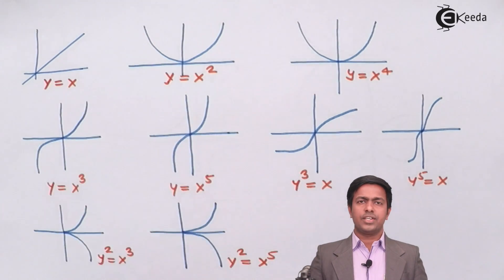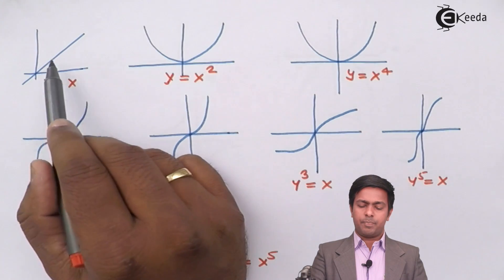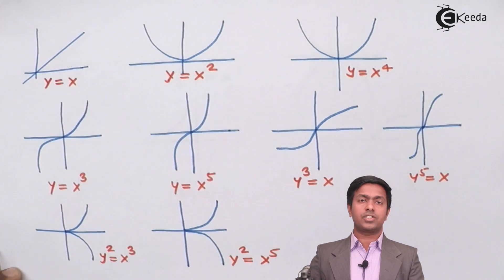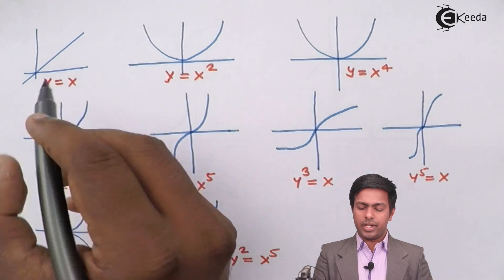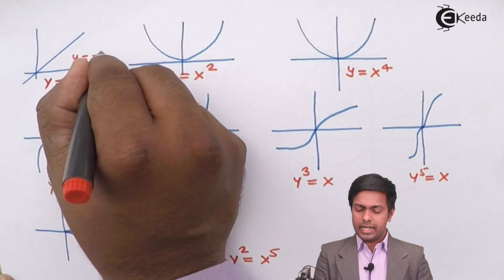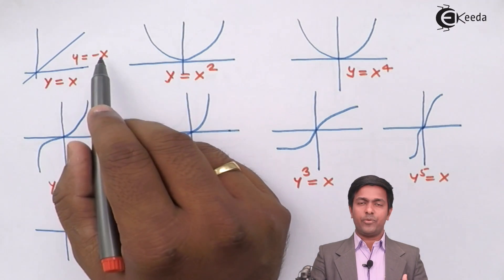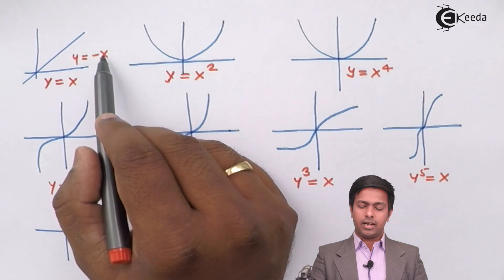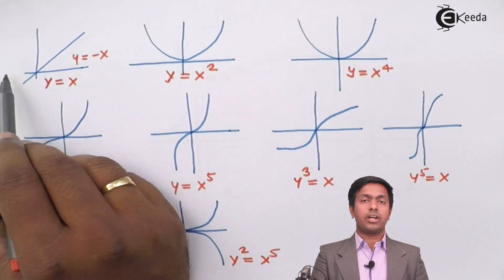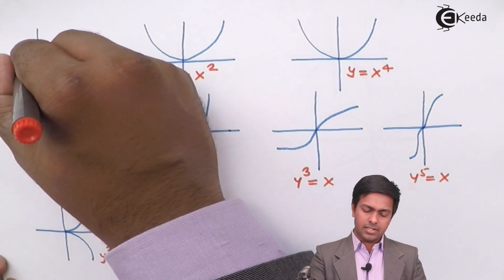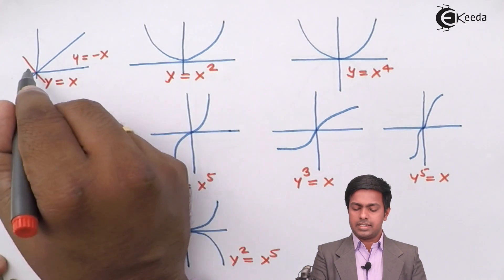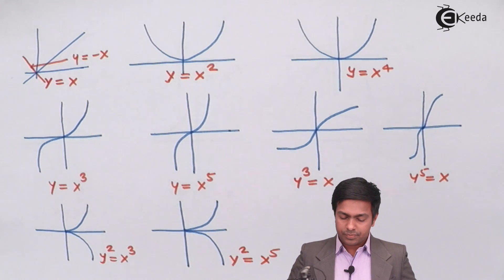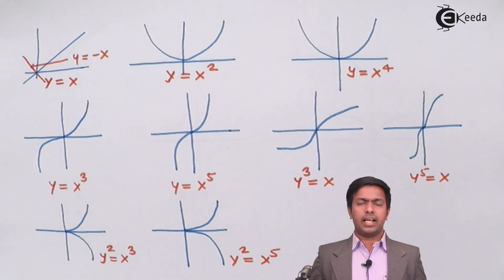The first curve is the straight line Y = X. This line passes through the first quadrant and the third quadrant. Now if the equation of the line is Y = -X, since X is negative in the second quadrant, this line Y = -X will pass through the second and fourth quadrants.